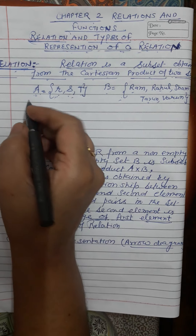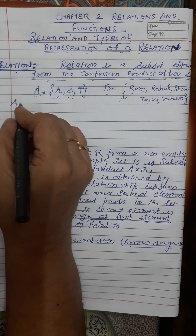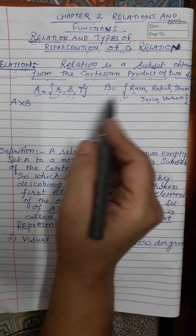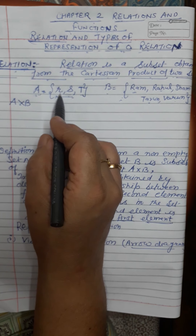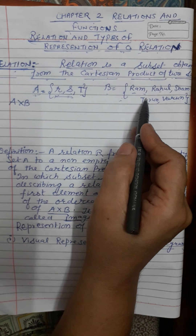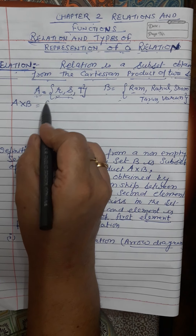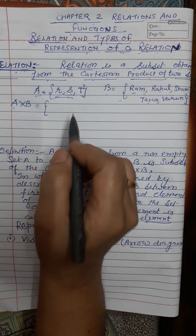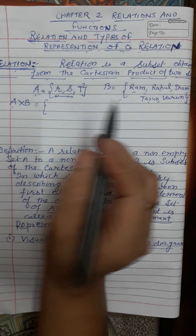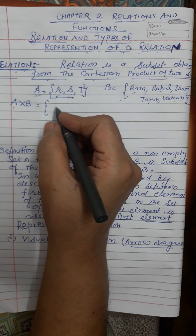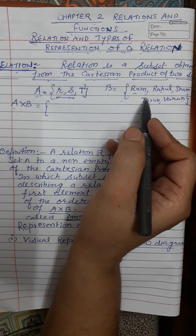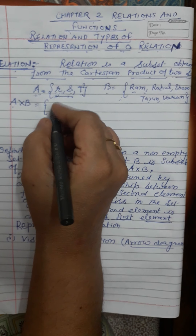Now if we find A cross B, the Cartesian product of A and B, we will have how many elements? There are three in A and five in B, so three multiplied by five gives fifteen elements in the Cartesian product of A and B. From these fifteen elements, if we take some, they will be in ordered pairs — one element from A and the other from B.